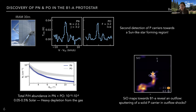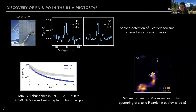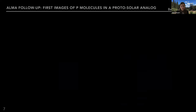We weren't able to get spatial information about where phosphorus is coming from with those observations, but there were existing images of SiO emission in B1-A. SiO is an outflow tracer, and we can see it tracing an outflow structure coming out south of the source. At the time, we speculated that sputtering of a solid phosphorus carrier is happening within these outflow shocks, explaining why we see anything in the gas phase. The exciting next step was following up the source with ALMA to get real images of where the phosphorus molecules are emitting from.